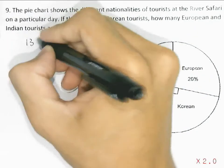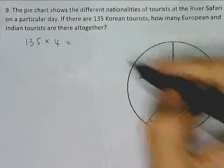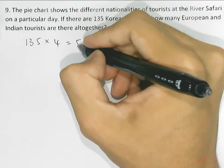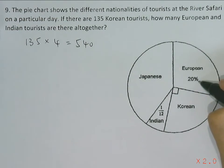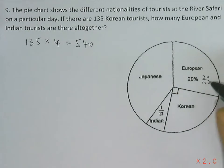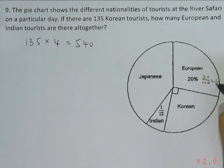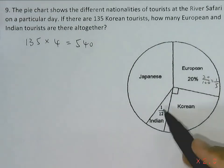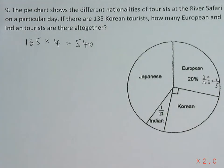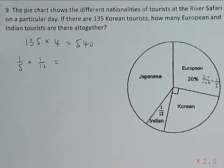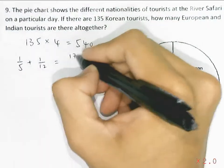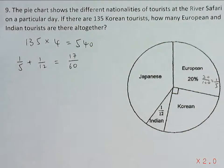To find the total number of tourists, since Korean occupies one quarter, the total will be 135 multiplied by 4, which gives us 540 tourists. Next, we notice that European tourists make up 20%. Converting this into a fraction gives 20 over 100, which simplifies to 1 fifth. So to find the total fraction of European and Indian tourists, we take 1 fifth plus 1 twelfth, which gives us 17 over 60.